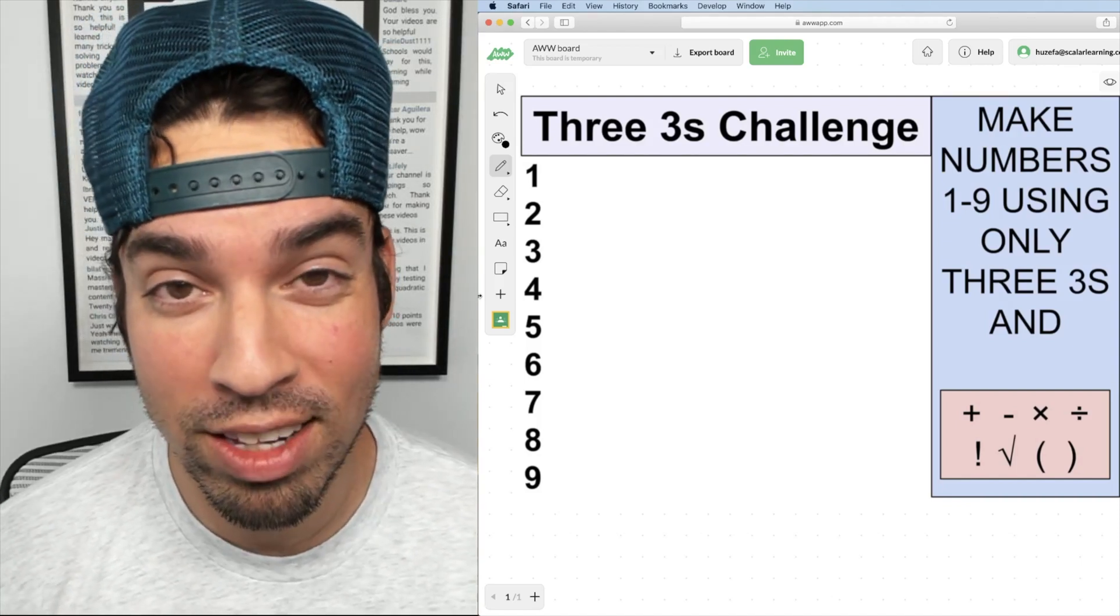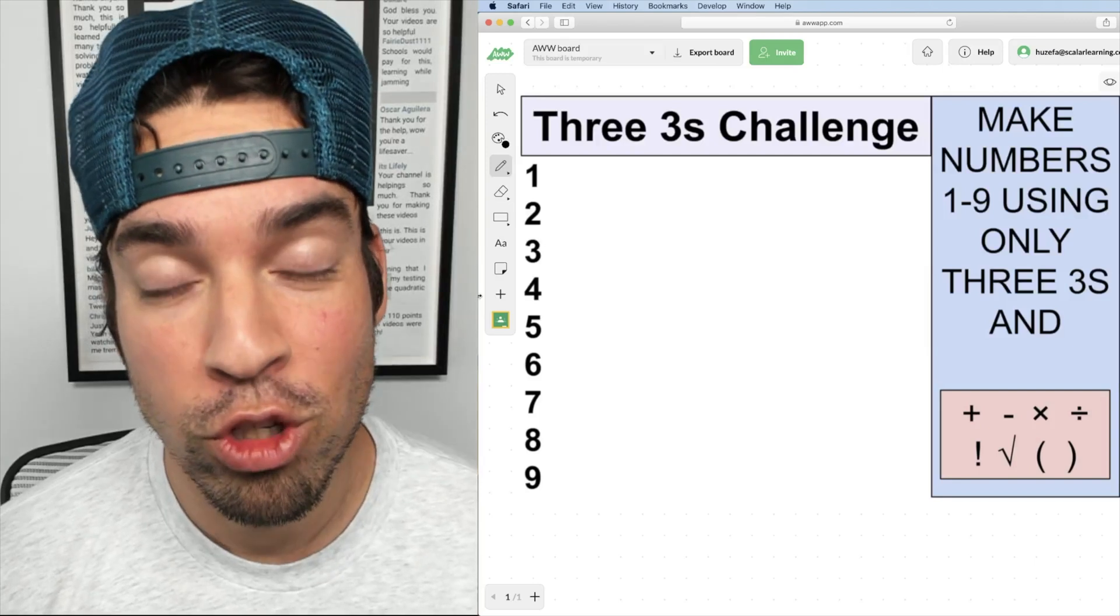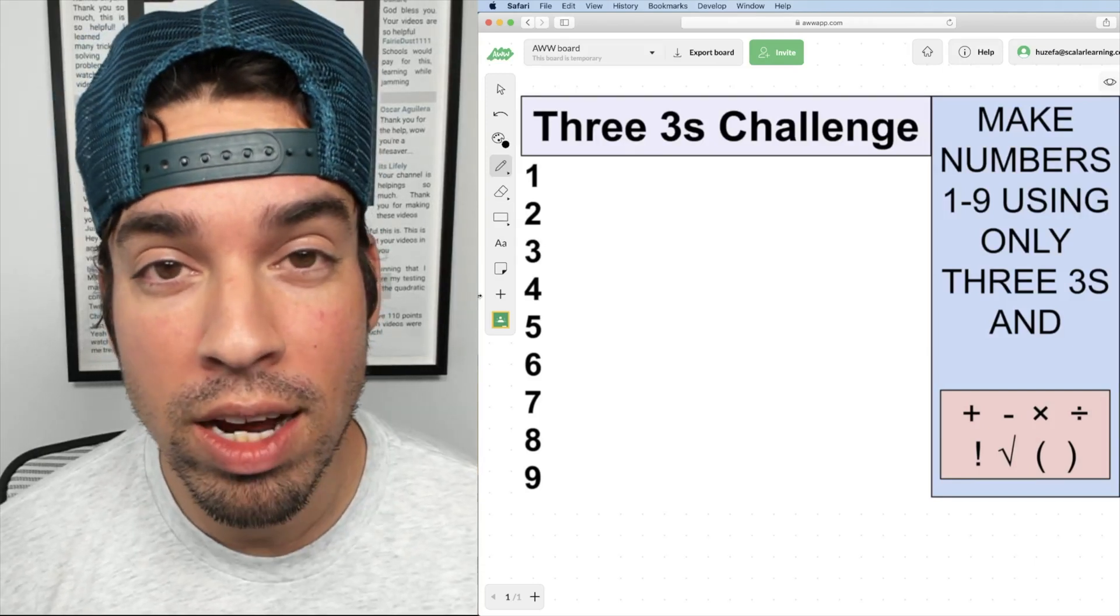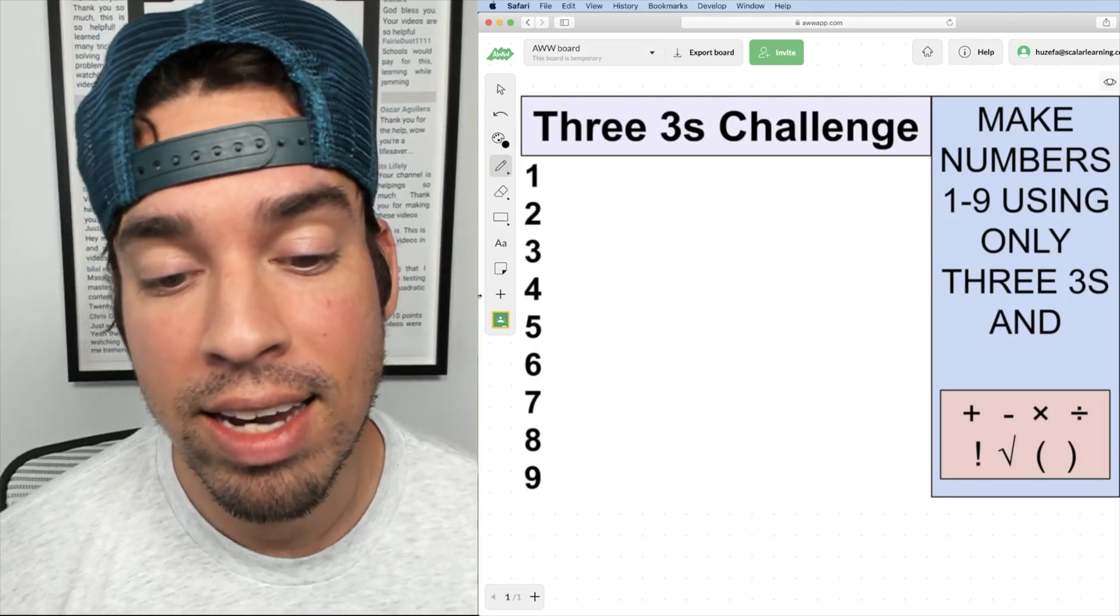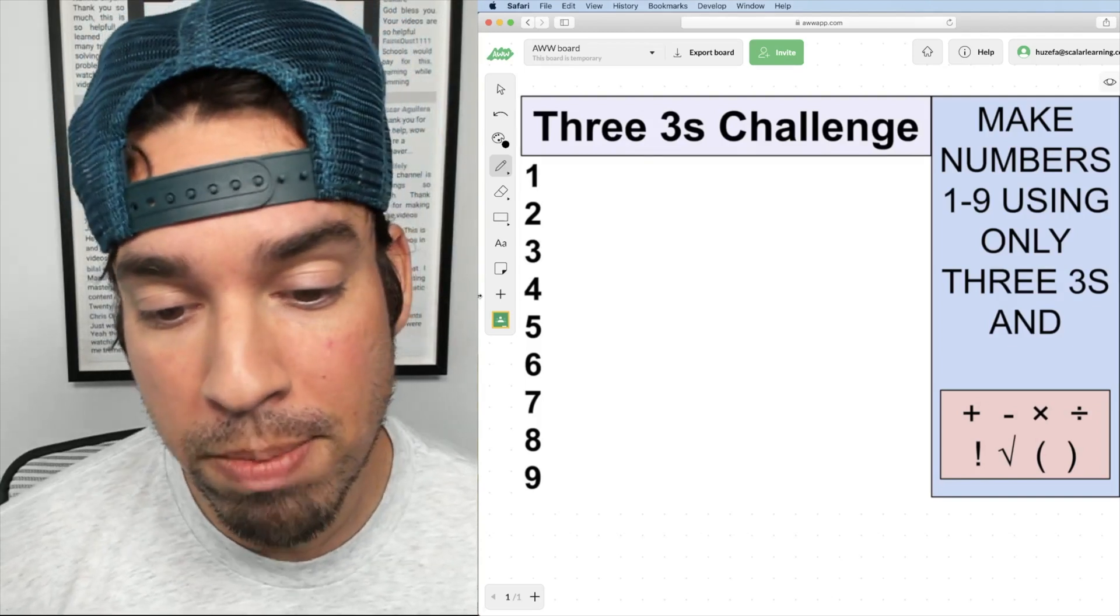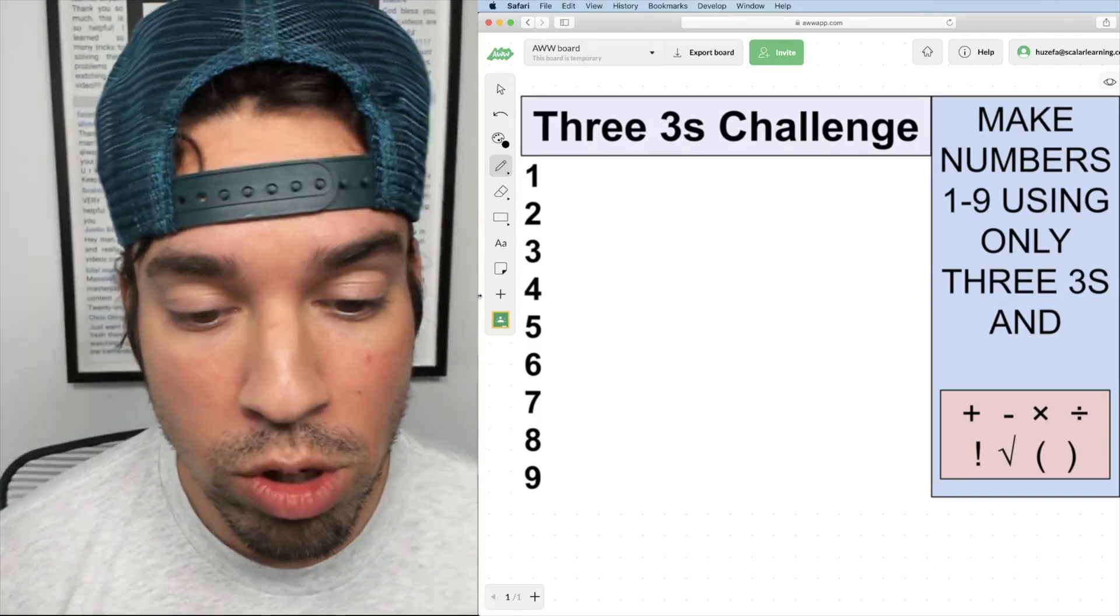This is called the three threes challenge and what you're supposed to do is make numbers one through nine using three threes and any of the operators below.